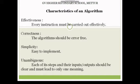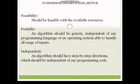Seventh, unambiguous: each of its steps and their inputs and outputs should be clear and must lead to only one meaning. We say it's unambiguous because we have a clear meaning — if we have an algorithm, we have one conclusion, leading to only one meaning. So that's unambiguous. That's the same set of characteristics.